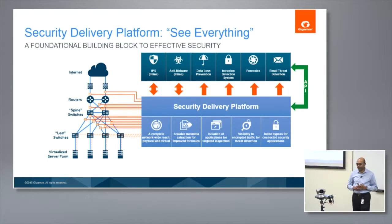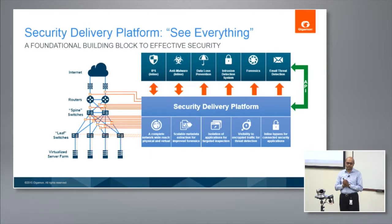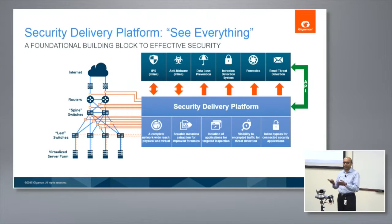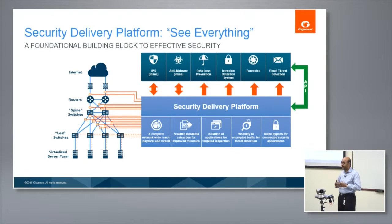That's what we call a security delivery platform. We believe there are six key components. The first is you've got to have complete network-wide reach — doesn't matter if it is physical or virtual, you've got to have that full reach. Without it you're getting partial views of the infrastructure. There are many changes happening: Cisco ACI, VMware NSX, SDN, disaggregation, moves from 10 gig to 40 gig to 100 gig — but the visibility infrastructure must have that network-wide reach.